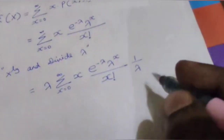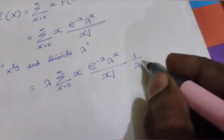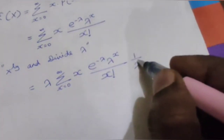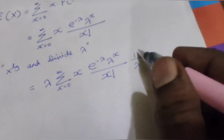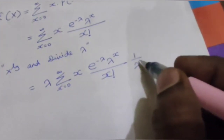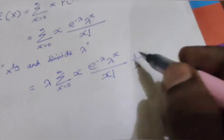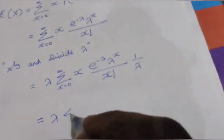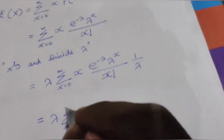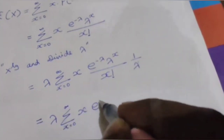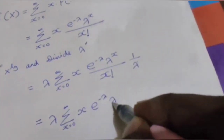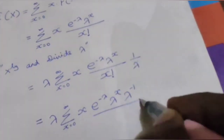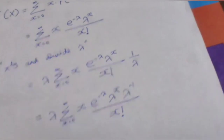So E of x equals summation from x equals 0 to infinity of x times e to the power minus lambda times lambda to the power x divided by x factorial. We multiply and divide by lambda to rewrite lambda to the power x as lambda times lambda to the power x minus 1, keeping the summation equivalent.